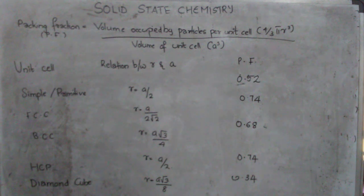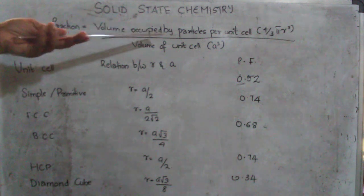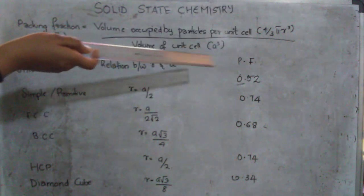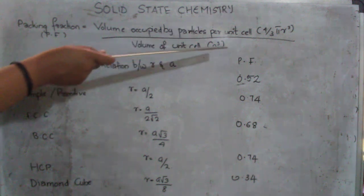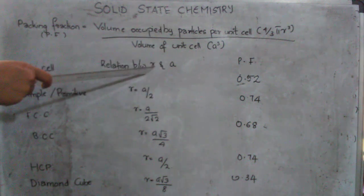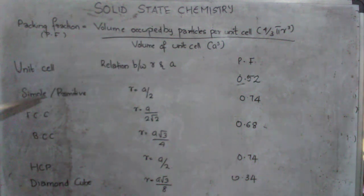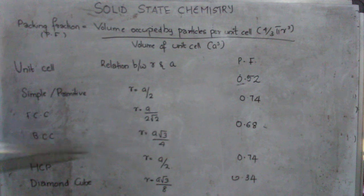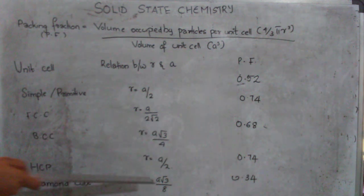Now continuing with the next important set of equations. First of all, we need to know that packing fraction is equal to volume occupied by particles per unit cell which is equal to 4/3 pi r cube where r is the radius of the particle divided by volume of unit cell which is equal to a cube where a is the edge length. Now this relation gives the relationship between the radius of the particle and the edge length of the unit cell. For the simple or primitive unit cell, r equal to a/2. Face centered, it will be a/2 root 2. Body centered, a root 3/4. And hexagonal closed pack r equal to a/2.